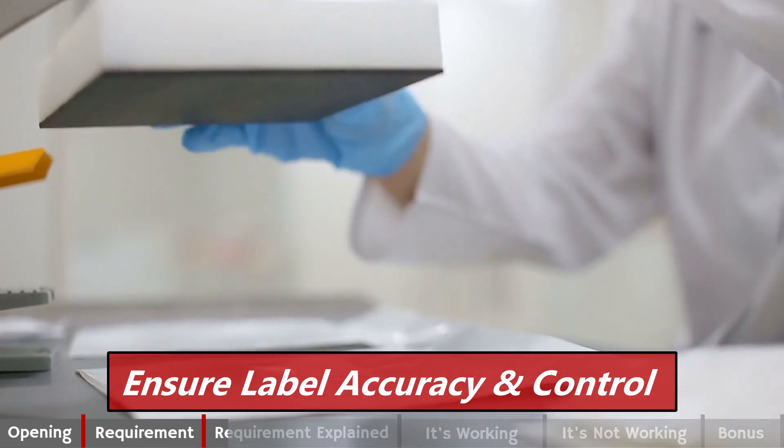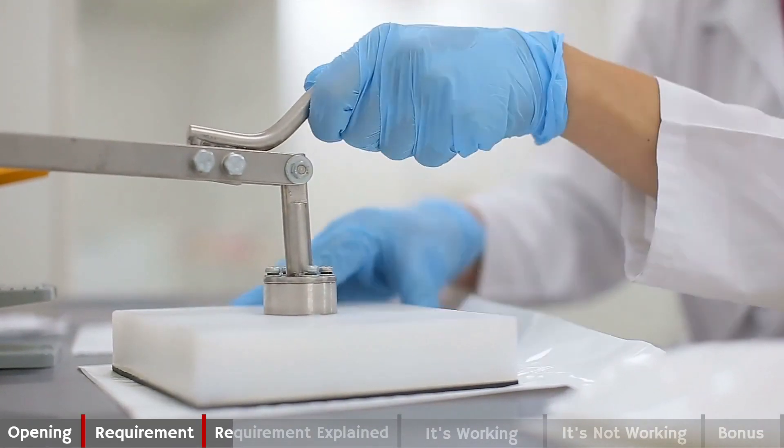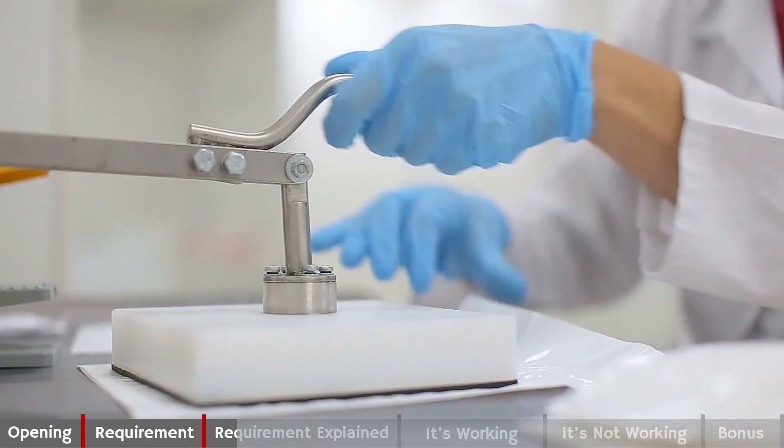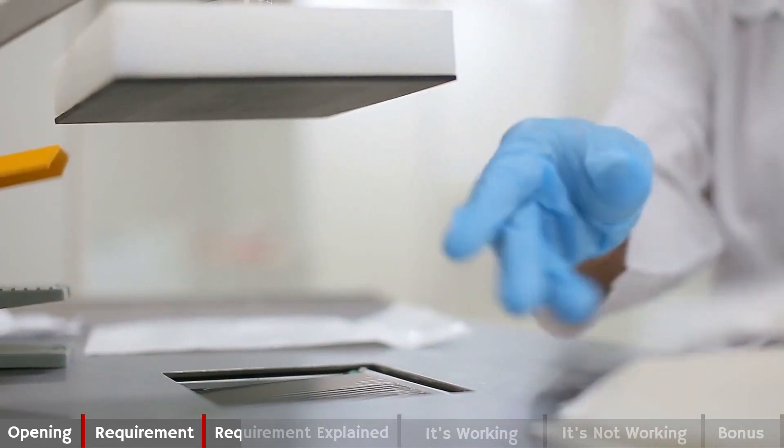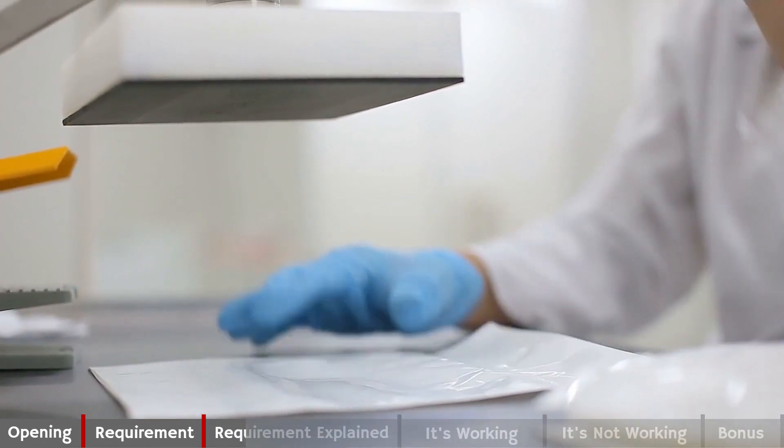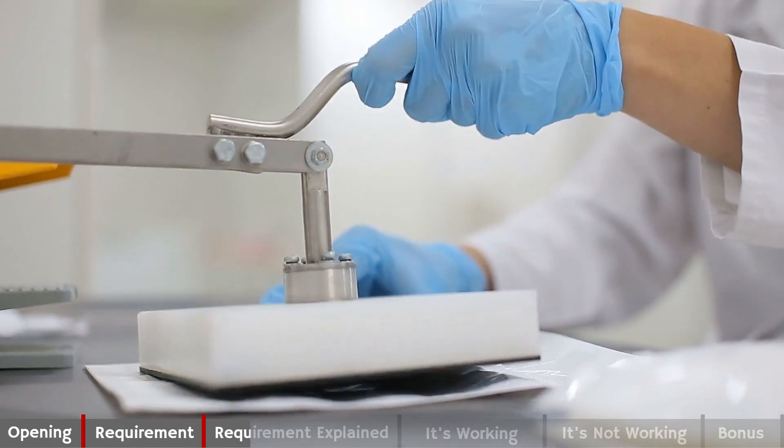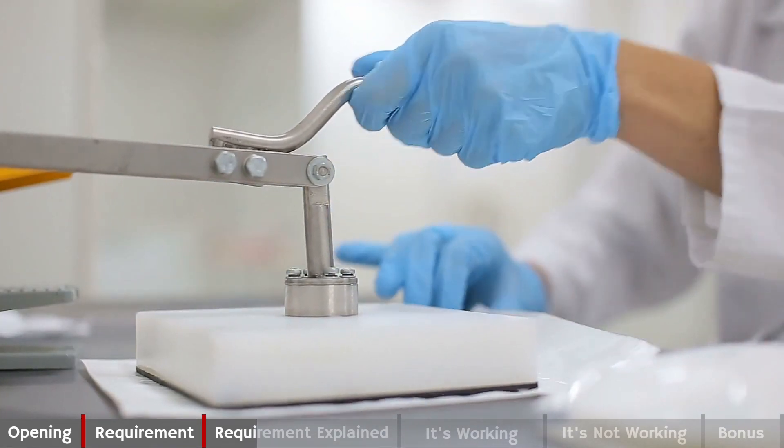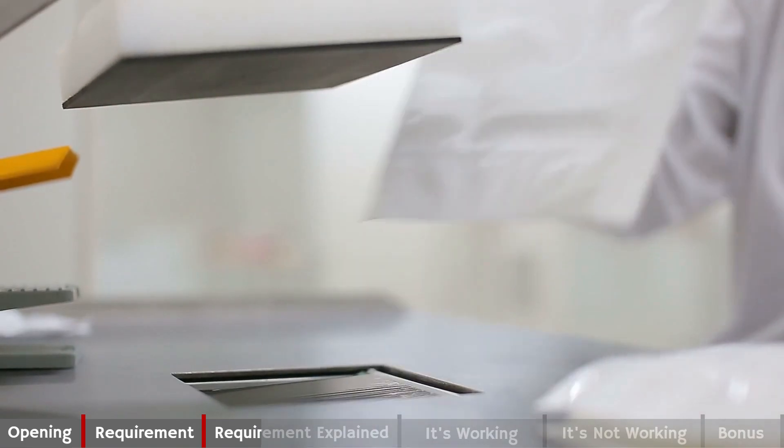When we look at device labeling, 820 has more detailed requirements than 13485. 820 outlines five areas where medical device labeling must be controlled. They are integrity, inspection, storage, operations, and control. Let's get into each one of them.